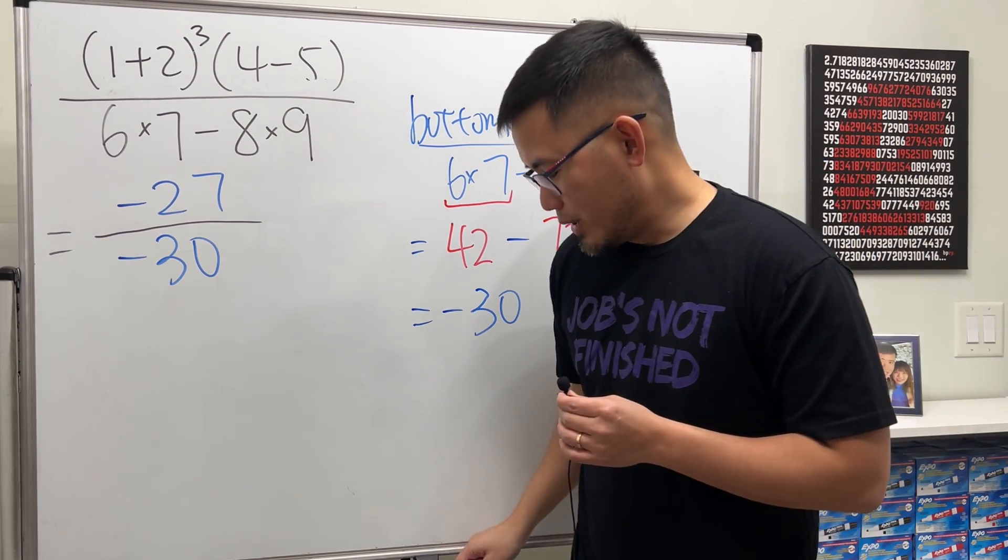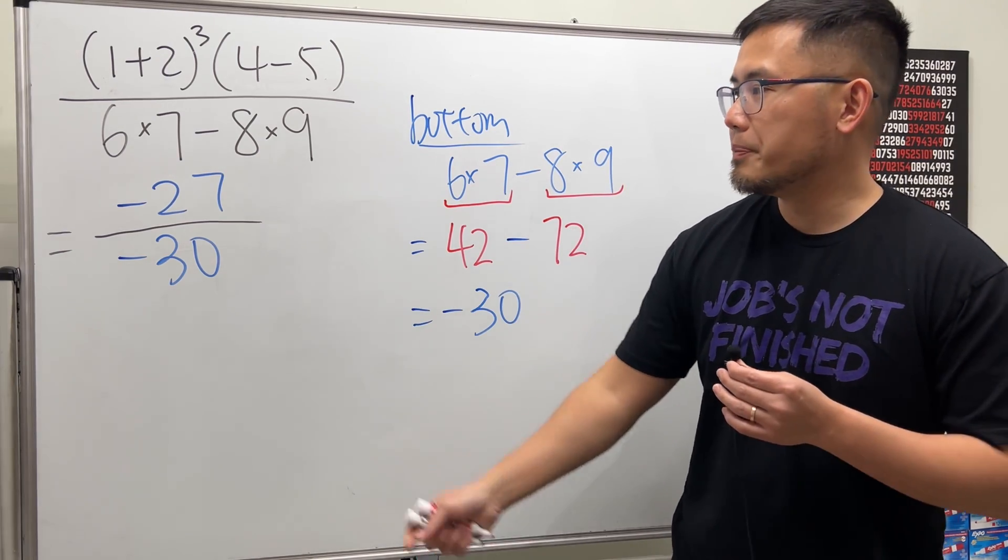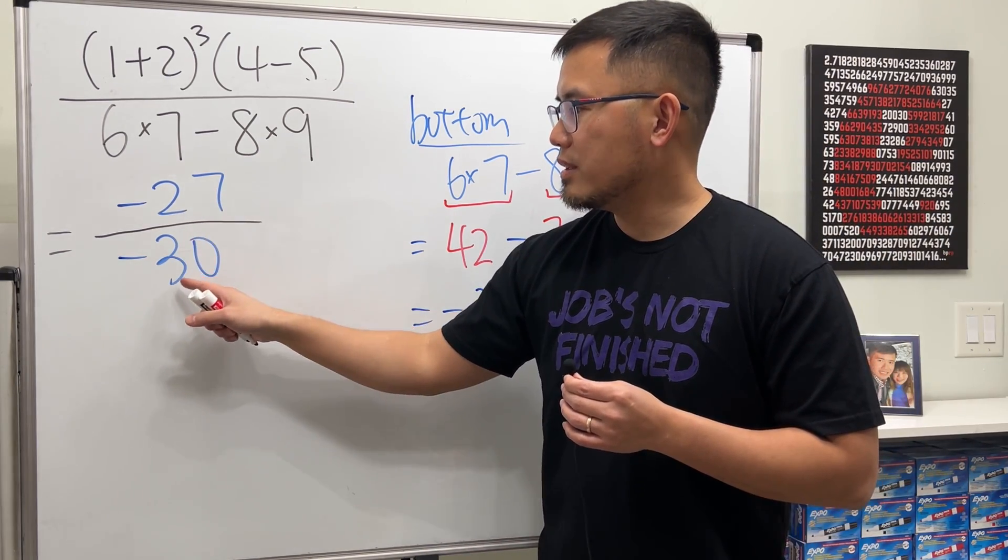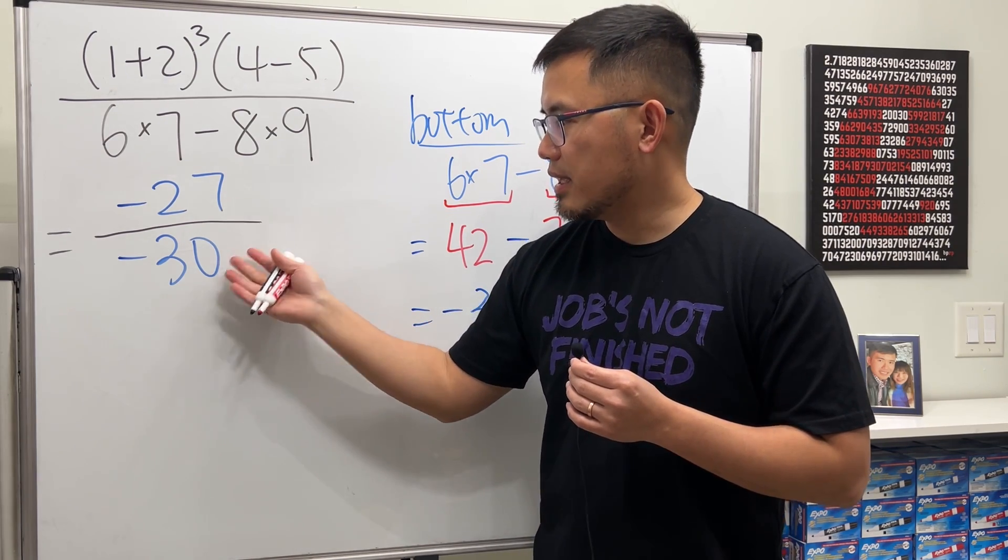Well, remember, whenever we end up with a fraction we always want to check if we can reduce this or not. Here we have 27, here we have 30. Think about a number that goes into 27 and 30 evenly.